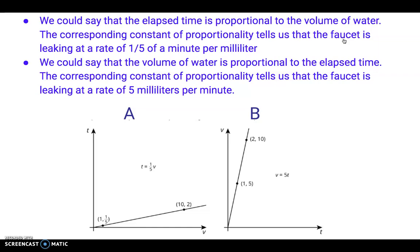And the description of graph B would be we could say that the volume of water is proportional to elapsed time. The corresponding constant of proportionality tells us that the faucet is leaking at a rate of five milliliters per minute.